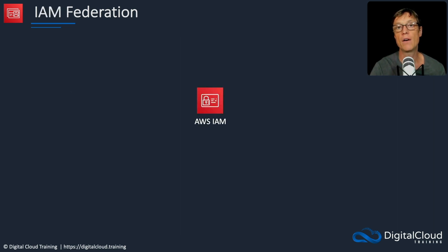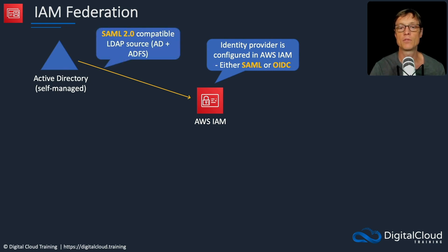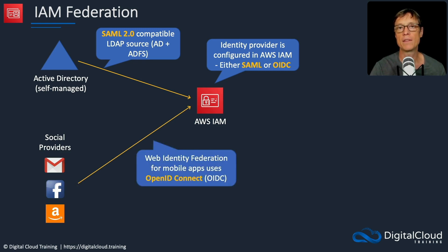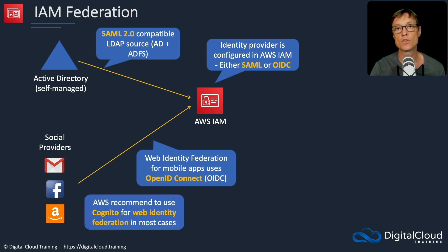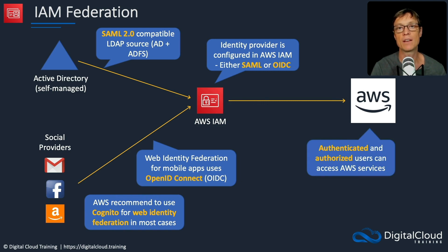With IAM, you can use a SAML source or an OIDC source for identity federation. For example, Active Directory is a SAML 2.0 compatible source that you can connect to IAM. Or you might have social providers, which use Web Identity Federation with OpenID Connect, and those can also be connected into IAM. AWS recommends using Cognito for Web Identity Federation use cases most of the time. Using IAM Federation, these identity sources can be granted authenticated and authorized access to AWS services.